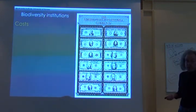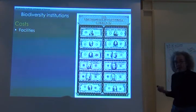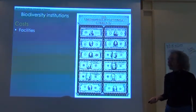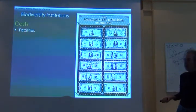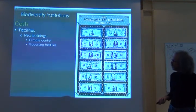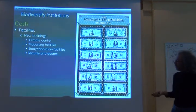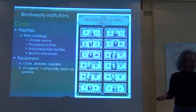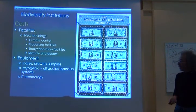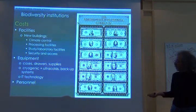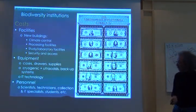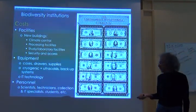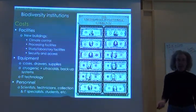You can anticipate these typical costs in setting up a biodiversity informatics institution: facilities costs — new buildings, climate control, processing specimens, studying and laboratory facilities, security and access, equipment cases, drawers, supplies, cryogenic facilities if you're going to have tissues, which you must. Also I.T. technology, informatics technology, personnel — scientists, technicians, collections and I.T. specialists, students, and so forth.